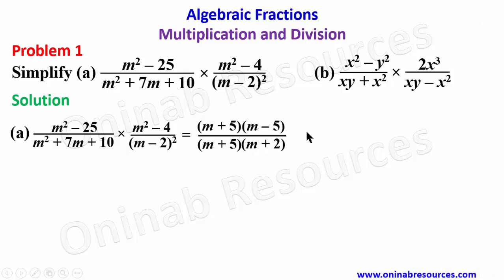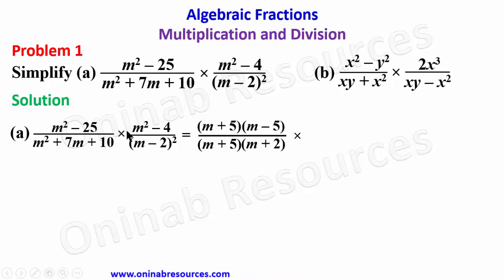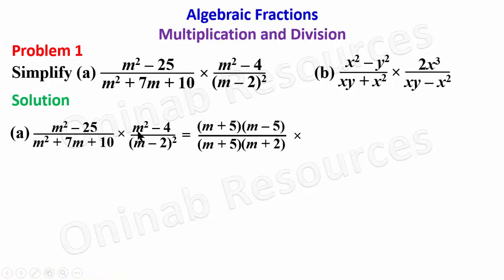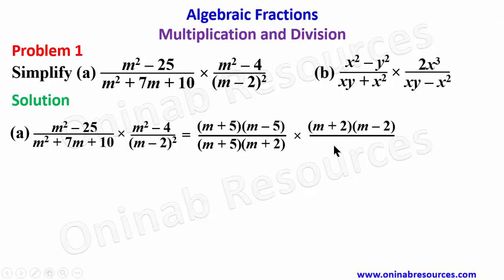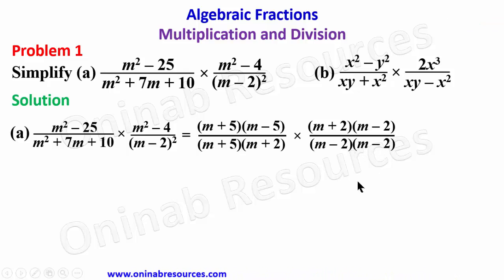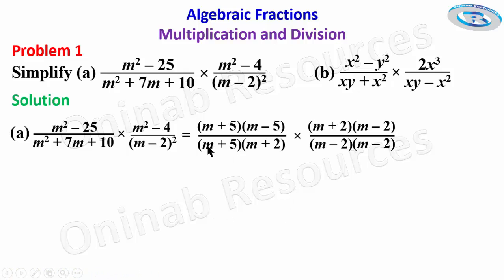Then for the second fraction, the numerator m squared minus 4 is also a difference of two squares since 4 can be written as 2 squared, so that gives m plus 2 into m minus 2. The denominator is m minus 2 squared, meaning it multiplies itself twice, giving m minus 2 into m minus 2.